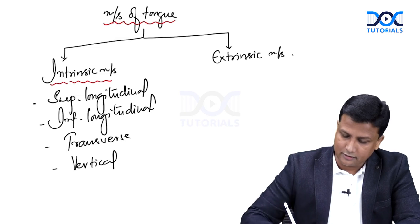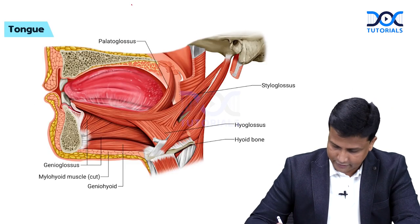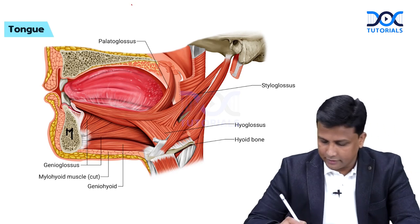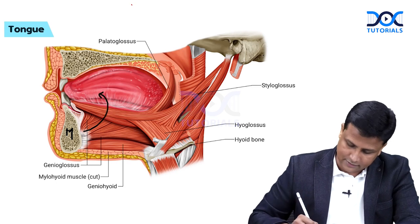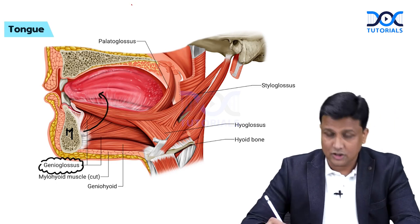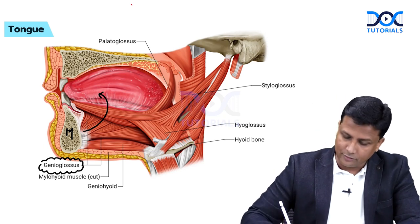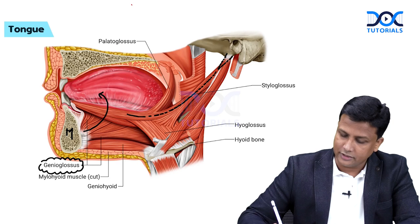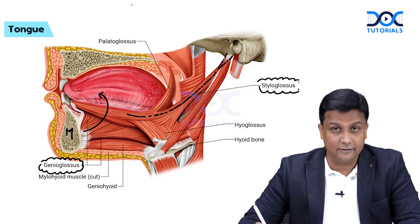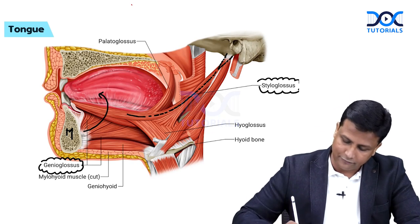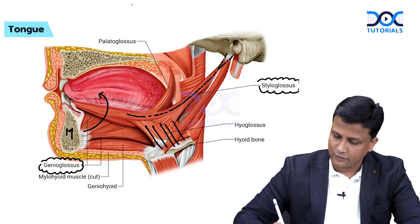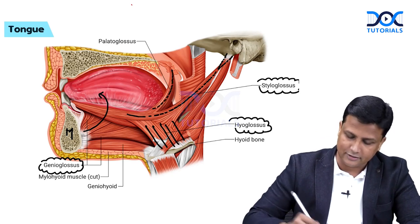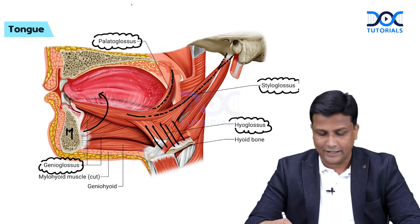Now, the extrinsic muscles of the tongue — we can learn these very easily with the help of a diagram. In this diagram you can appreciate the mandible, and from the mandible there is a muscle going inside the tongue: the genioglossus muscle. Then behind, we have the styloid process, and from the styloid process one muscle enters the tongue: the styloglossus muscle. Below is the hyoid bone, from which the hyoglossus muscle comes into the tongue. And above, from the palate, we have palatoglossus.